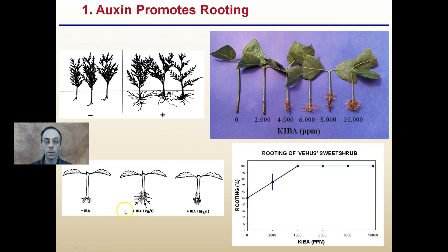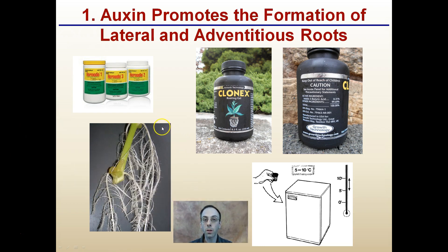IBA is a type of auxin, and we see the same kind of increase in rooting from initially no auxin added. However, what's interesting is that at 2 grams per liter we see more roots than at 16 grams per liter. So rooting increases to a certain point and then plateaus — increasing auxin concentrations too much can actually cause a slight decrease in rooting. More is not better, but some is definitely better than none. Products like Hormidin (1, 2, and 3 referring to different concentrations) and Clonex are common IBA-based products used to increase rooting. Auxins can be a little unstable, so it's good to store those products in the fridge to keep them as effective as possible.